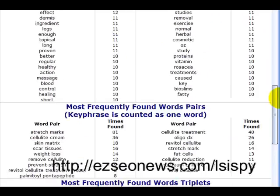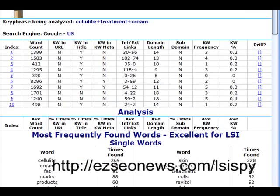So this tool, LSI Spy, is a fantastic tool to tell you exactly which words you want to include on your page.